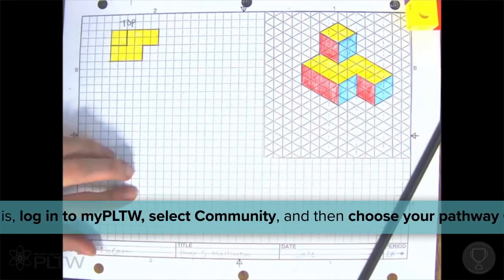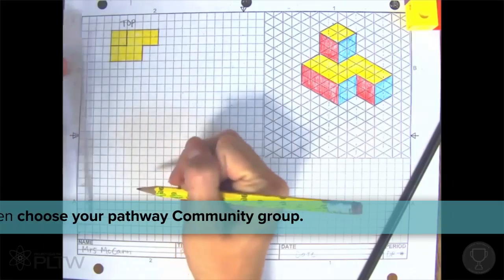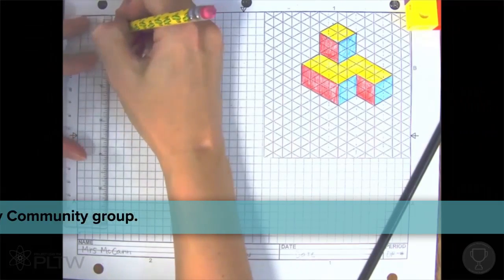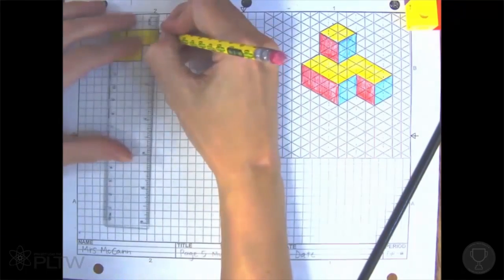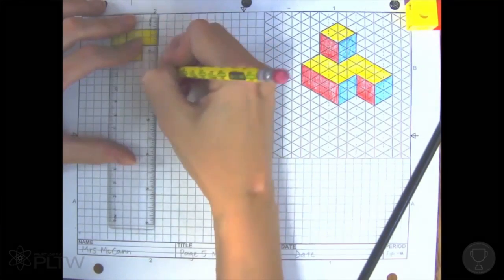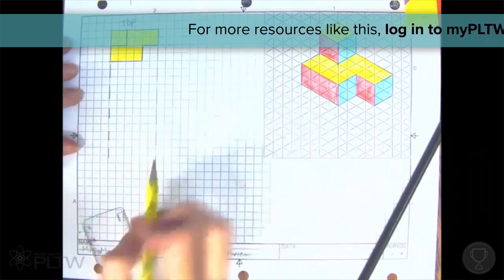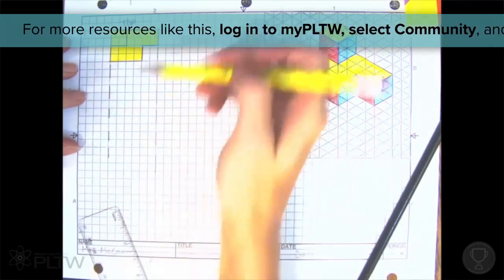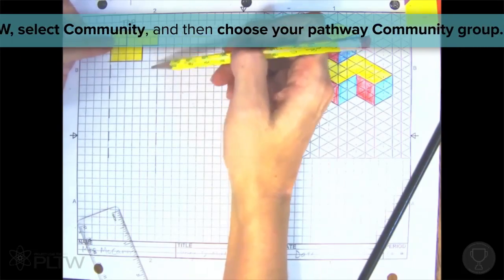Next, I want to do my front view directly below my top view. So I'm going to line up my ruler and make some dashed lines here so that I can make sure that I am lining it up exactly. The front view that I draw will fit right in to the same width as this top view.